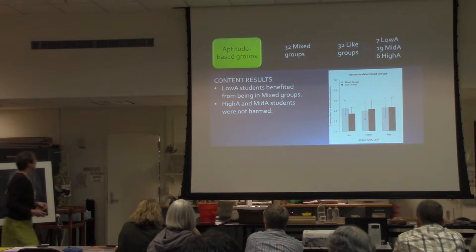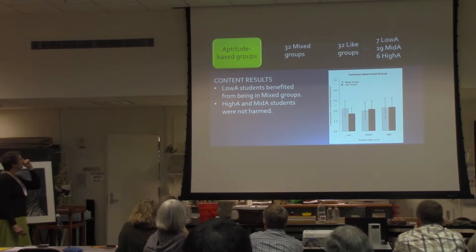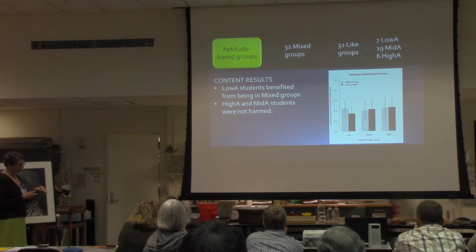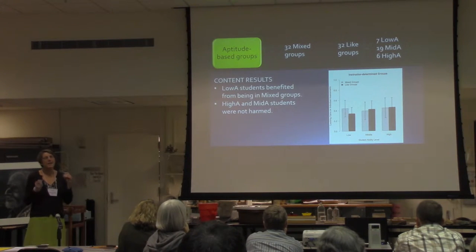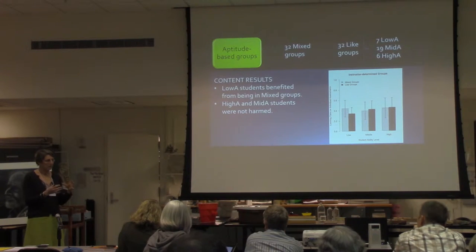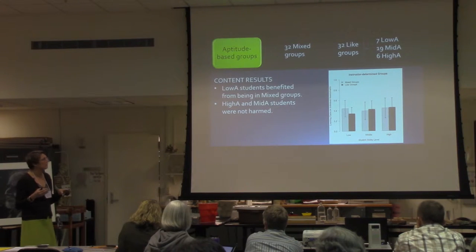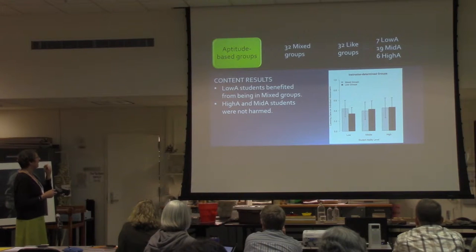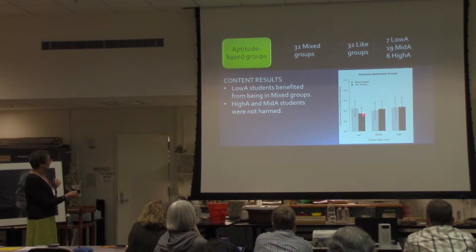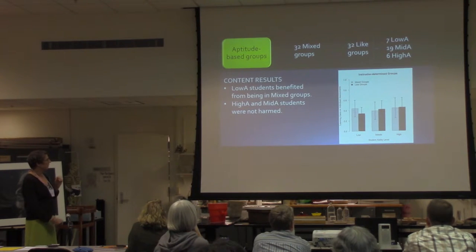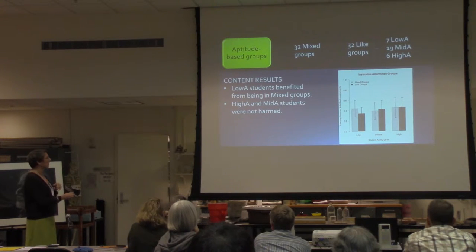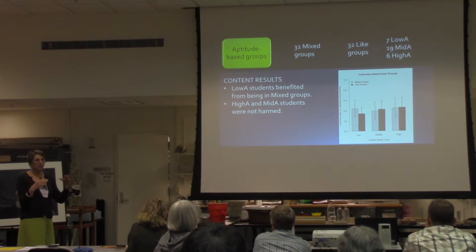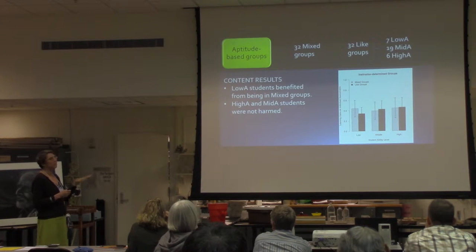What we found is that low aptitude students did much better in mixed groups. There is some conflicting evidence in the literature, mostly from K-12 studies, but in our data, students in like groups did significantly worse than those in mixed groups. Importantly, it was only the low aptitude students who were affected — mid and high aptitude students performed equally well in either group type. So working with lower aptitude students did not drag high aptitude students down, which is a common concern, and we found no evidence of that.